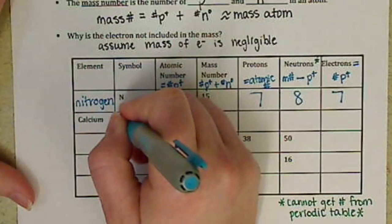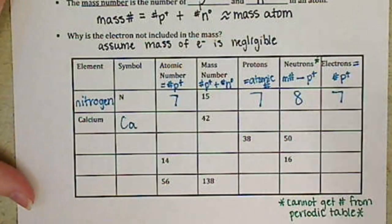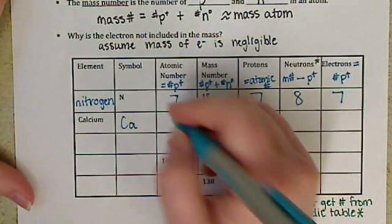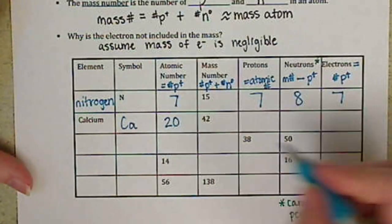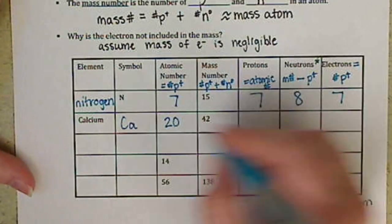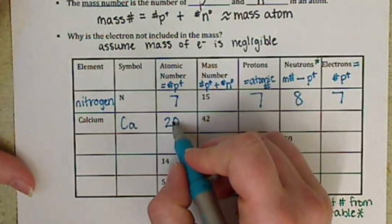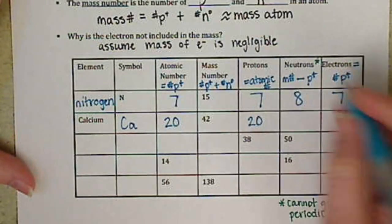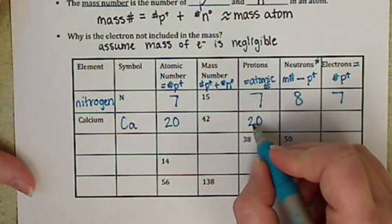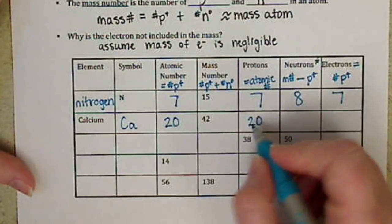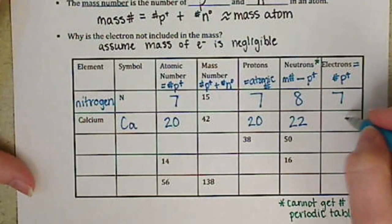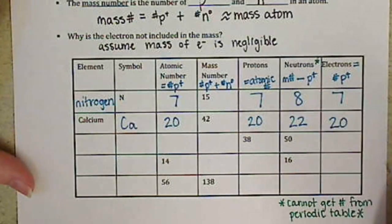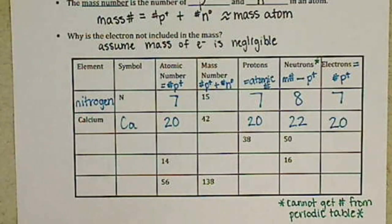So the symbol for calcium is a capital C, lowercase a. It has 20 protons, mass number of 42. Oh, 20 atomic number, sorry. It also has 20 protons. Neutrons, we look at, take our mass number minus our number of protons. We have 22. And our number of electrons, the same as our number of protons for 20.